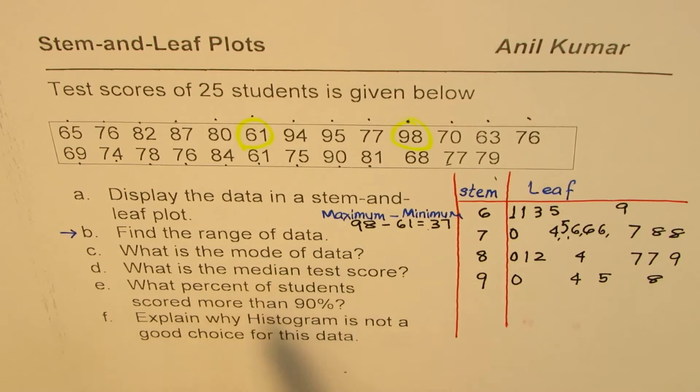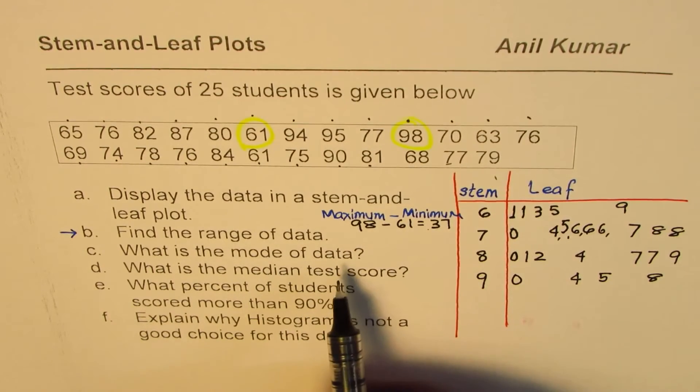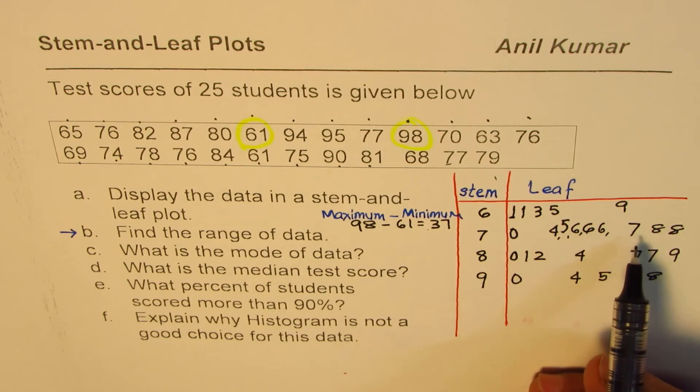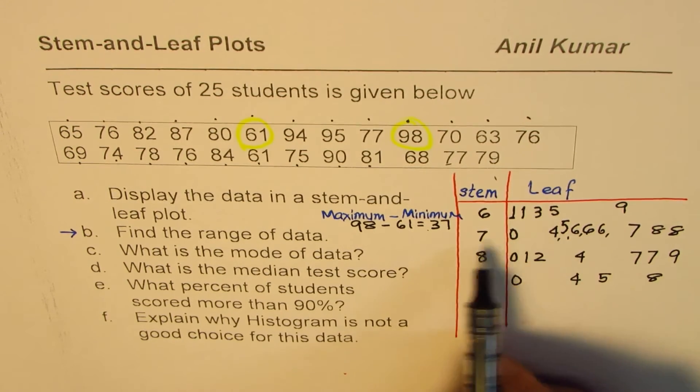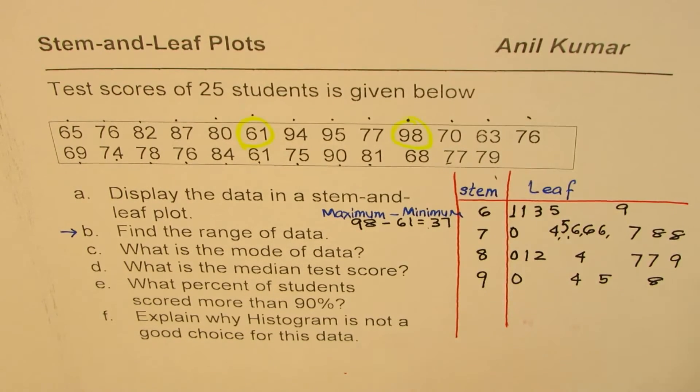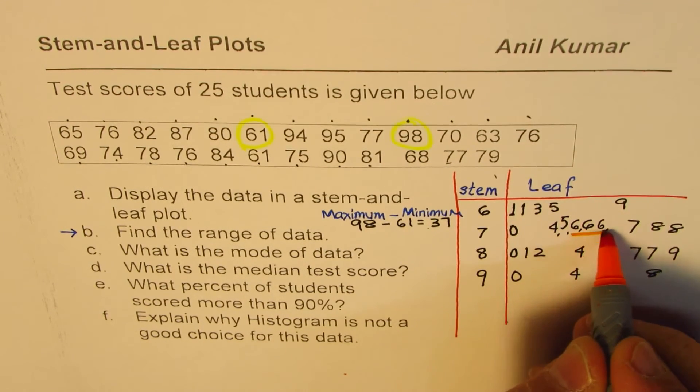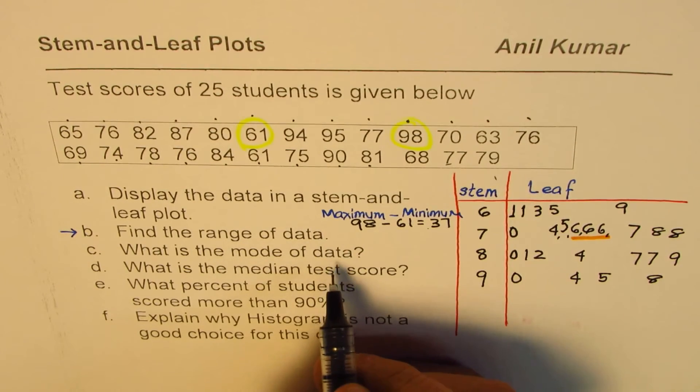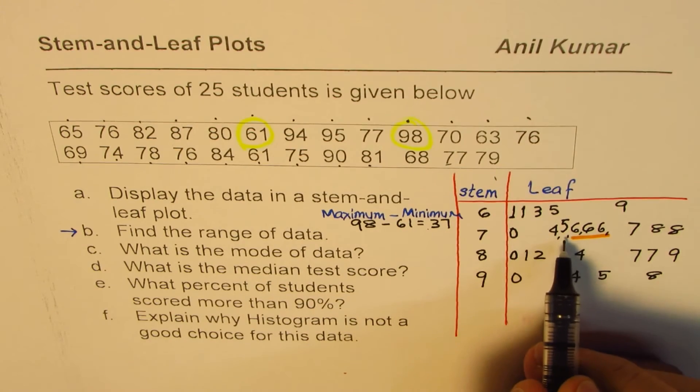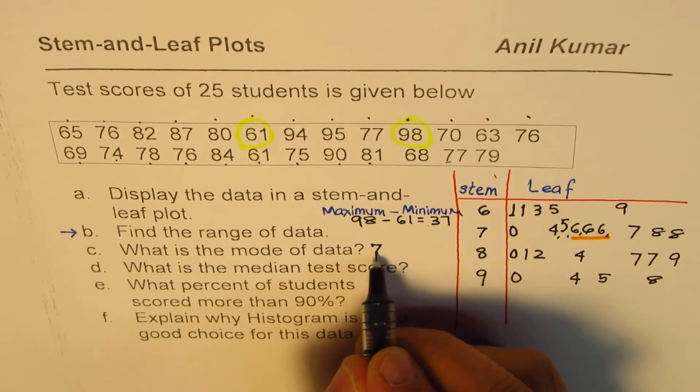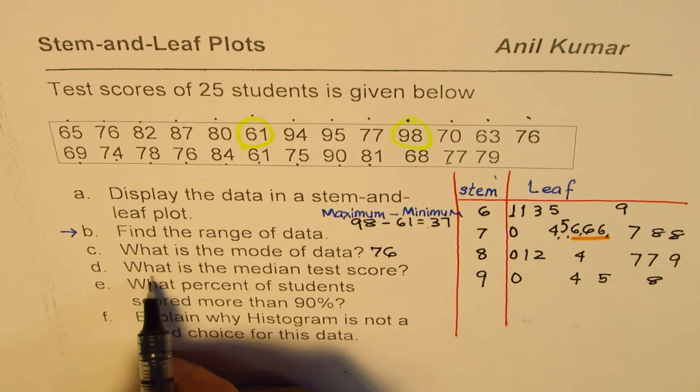What is the mode of data? To find the mode, let's look into which one has come the most number of times in a particular row. You can clearly see that we have 76 three times, and therefore we can see that the mode, the most frequent, is 76.